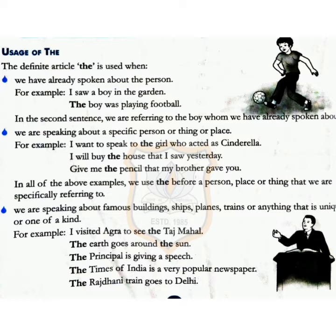Usage of 'the': 'the' is the definite article. It is used where we have already spoken about a person. For example, 'I saw a boy in the garden. The boy was playing football.' In the second sentence, we are referring to the boy whom we have already spoken about in the first sentence.